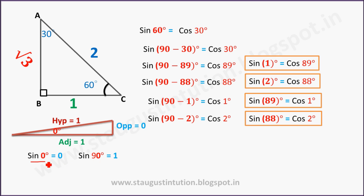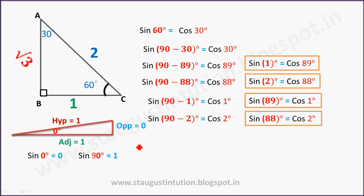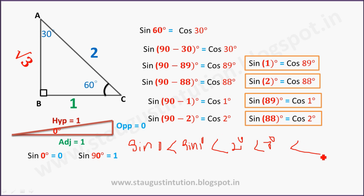Since sin 0° = 0 and sin 90° = 1, as the angle increases from 0° to 90°, sin increases. So sin is an increasing function in this range. Sin 0° = 0, sin 90° = 1, and the values increase steadily.